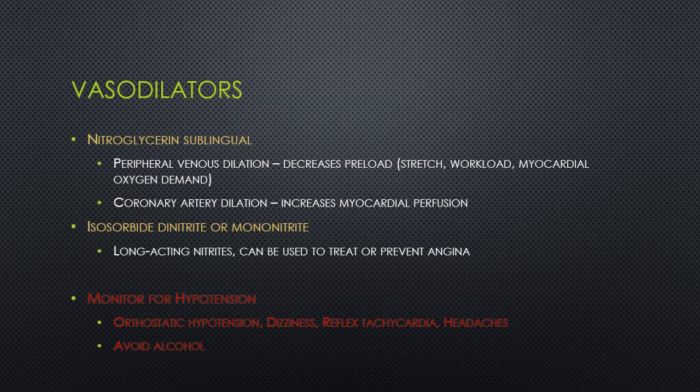Vasodilators decrease preload, which decreases the stretch and the force of contraction, so stroke volume and cardiac output are decreased, as well as blood pressure. Nitroglycerin dilates the coronary arteries and increases the oxygen supply to the heart. Nitroglycerin very specifically dilates the peripheral vasculature on the venous side, which decreases preload and oxygen demand, and it also dilates the coronary arteries, which increases myocardial perfusion.